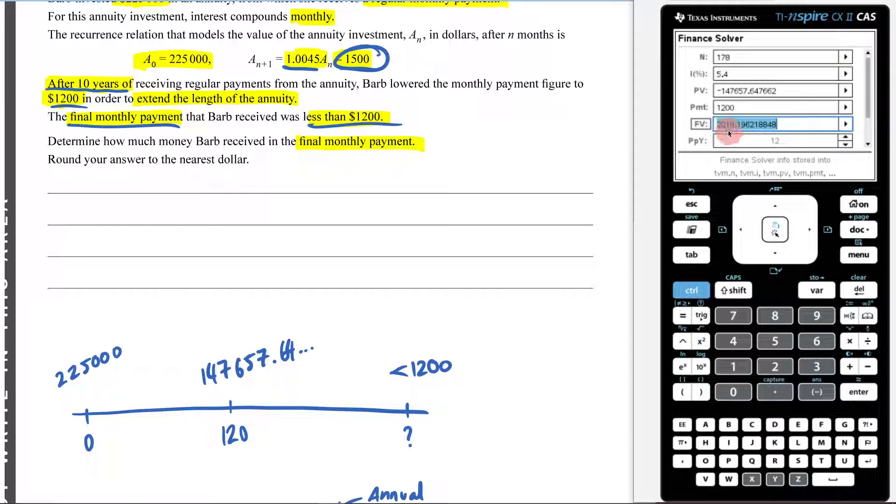Now that's obviously too much because I needed to be less than 1,200. So I'm going to come here. Let's see what happens when I put 179 in there. If it's 179, I now have $827 left in my annuity.